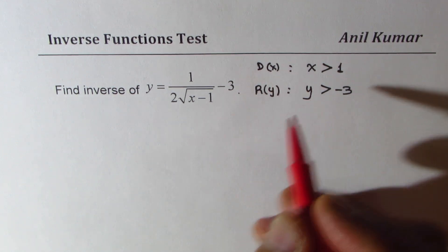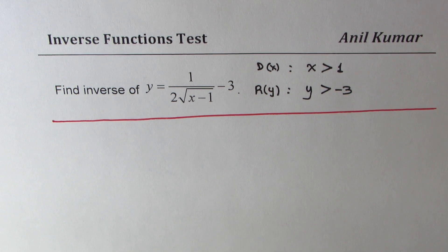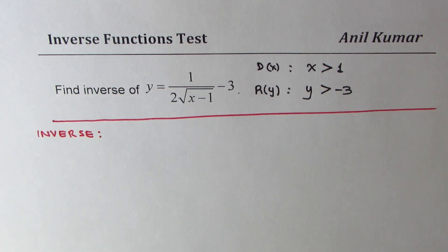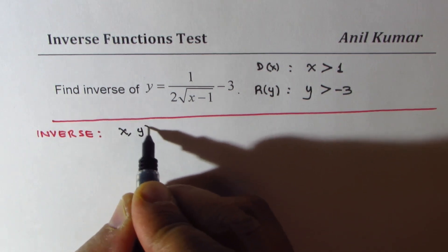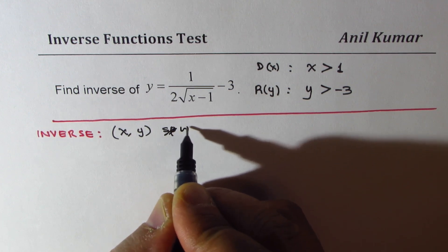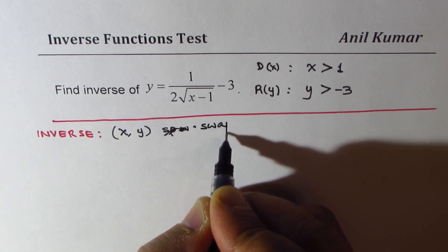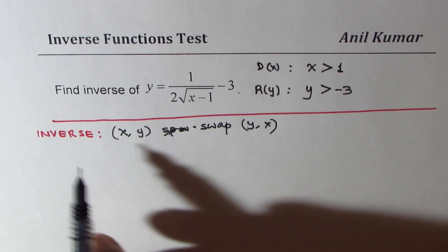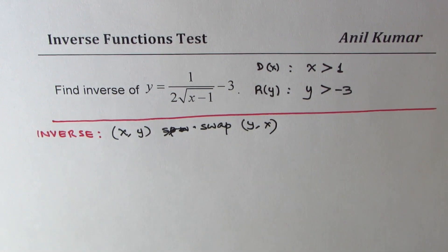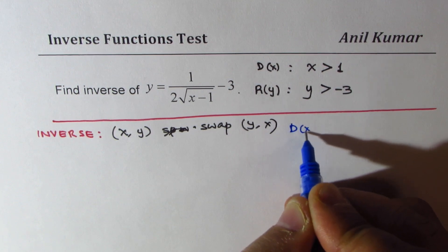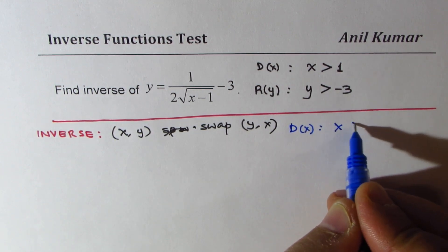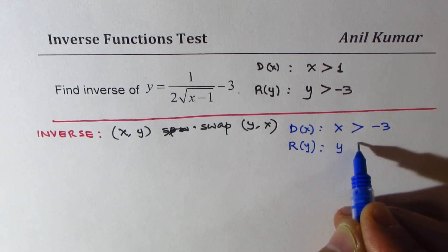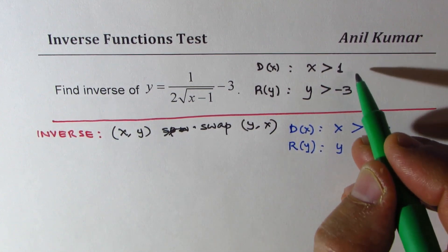It is important to write this down since when we find the inverse, x and y values swap. That means the domain and range also swap. So for the inverse of the function, the domain will be x greater than minus 3, and the range will be y greater than 1.